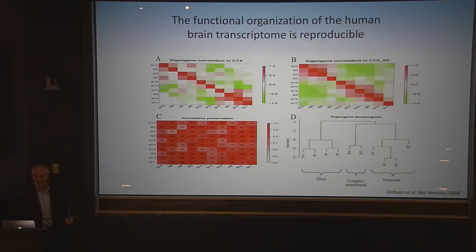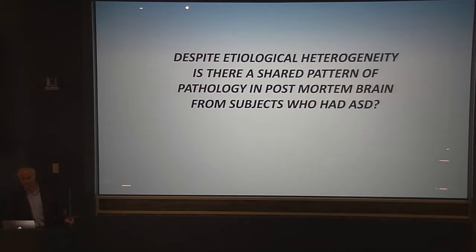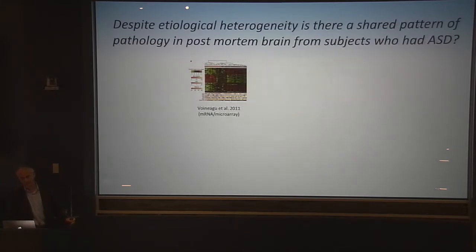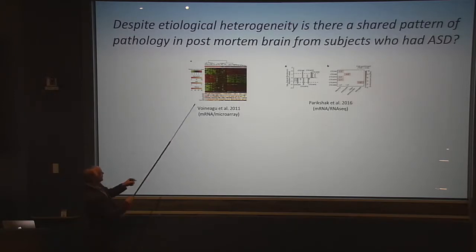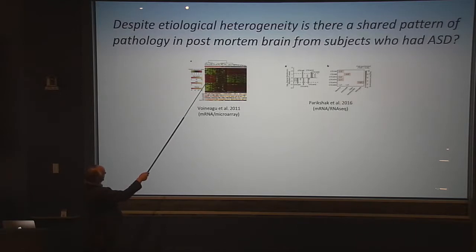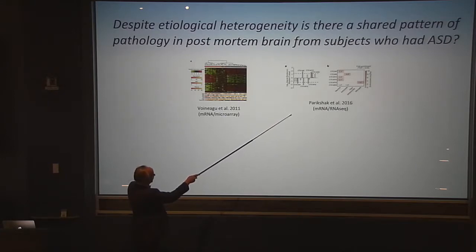One question once we saw this structure was: is it disrupted in autism? Despite etiologic heterogeneity — if I have 19 cases of autism, I'm likely to have 19 different genetic or environmental causes — is there a shared pattern of pathology from postmortem brain subjects with ASD? In the first microarray study with only 19 subjects and about 20 controls, I was shocked to find that about 75% of autism subjects showed a similar pattern. On the y-axis is gene expression, red being up and green being down — a shared pattern at the mRNA level. We were recently able to reproduce and refine this.